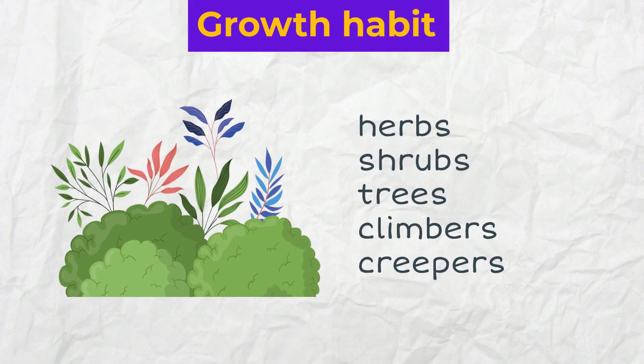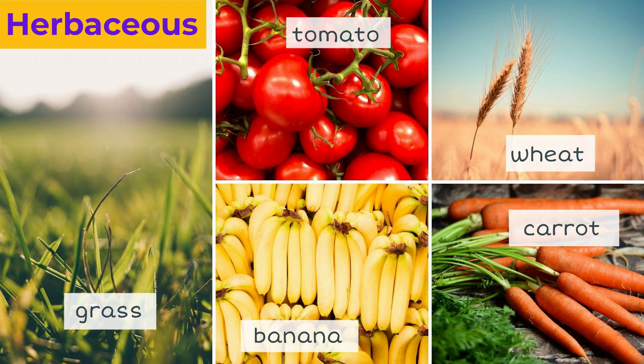One classification is based on the so-called growth habit, which shows the height and the shape of a plant. Here we have herbs, shrubs, trees, climbers and creepers. Most people believe that herbs are only grass, but this group of herbaceous plants also includes tomatoes, wheat, bananas and carrots.